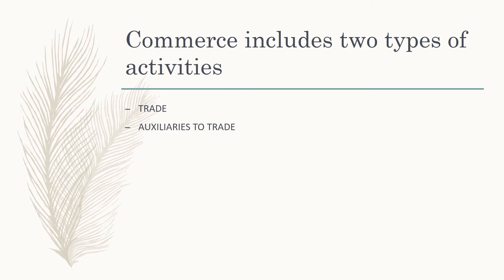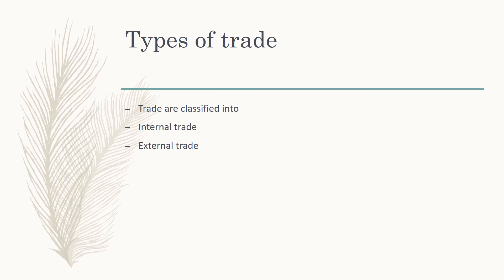Trade is divided into two types: internal trade and external trade. Internal trade means buying and selling of goods within the country's boundaries. External trade means buying and selling of goods outside the boundaries — that is, outside the country.